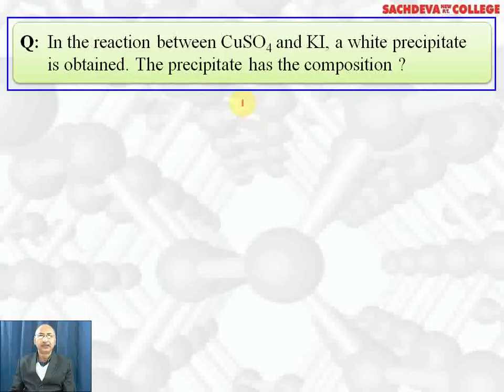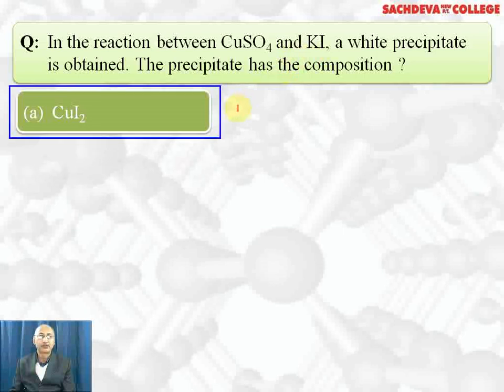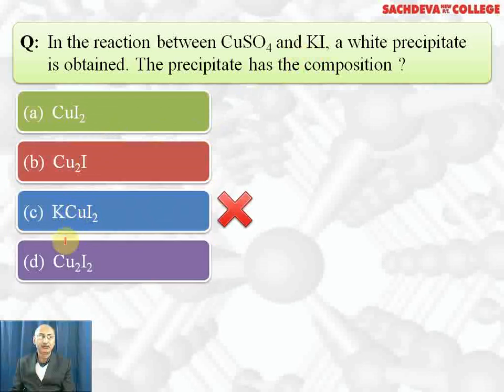Let's continue with multiple choice questions based on general principles, processes, and isolation of elements. In the reaction between CuSO4 and KI, a white precipitate is obtained. The precipitate has a composition of CuSO4 reacts with KI to form cuprous iodide because potassium iodide acts as reducing agent.